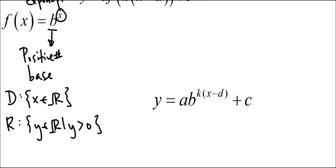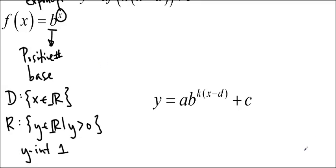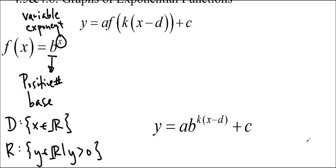Additionally, you know that you have to have a y-intercept of 1, because any number to the power of 0 is 1. So we always go through the point (0, 1). Those are some of the basic characteristics of the exponential function, no matter what the base is.